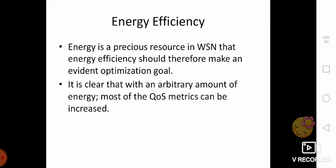Then energy efficiency. Energy is a precious resource in WSN and energy efficiency should therefore be an evident optimization goal. It is clear that with an arbitrary amount of energy, most of the quality of service metrics defined above can be increased considerably. Approximation and tracking accuracy are a notable exception as they depend on the density of the network. The term energy efficiency is in fact an umbrella term for many different aspects of a system which should be carefully distinguished in the form of actual measurable figures of merit.